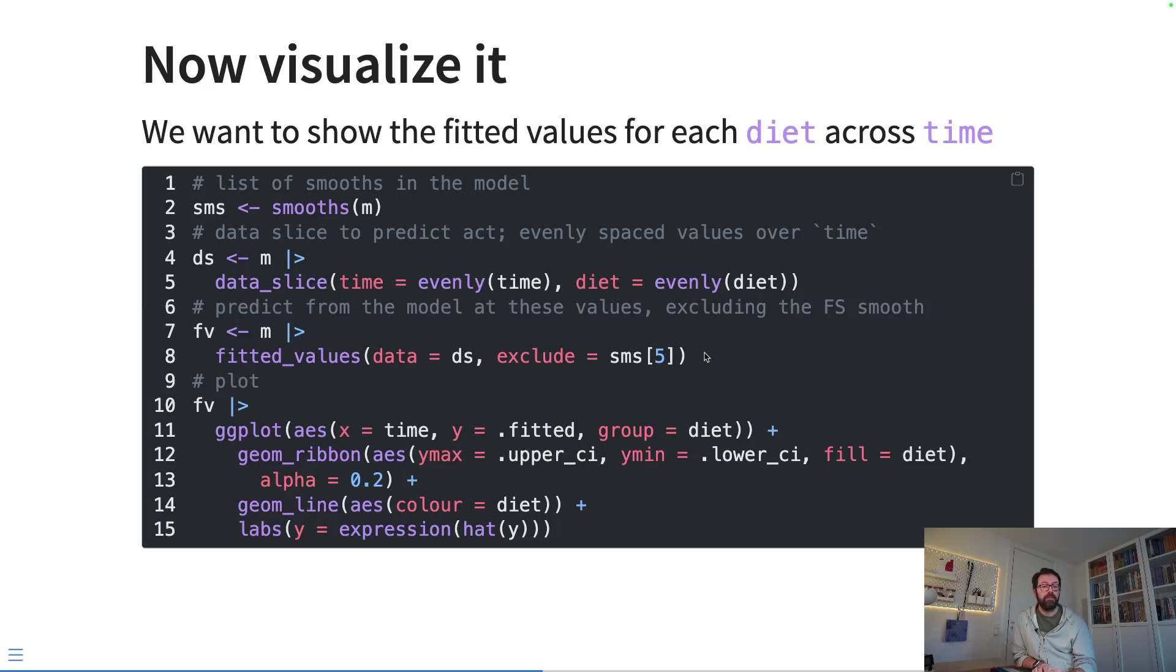We exclude the chick factor smooths of time, so we remove the chick-specific growth rates. So now we're modeling the smooths for the different diets, or we're showing the smooths for the different diets. Then a little bit of ggplot here to visualize that. We're mapping the time variable to the x-axis, the fitted values from the model to the y-axis. We're grouping them by diet so that we get a nice line for each of them.